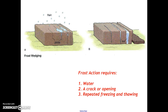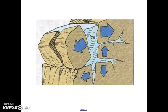In order for frost wedging, or frost action, to happen, you need three things: water, a crack or opening in a rock, and a repeated series of freezing and thawing events. In other words, the temperature has to drop below freezing, then go above freezing, then below, then above. In New York, frost action is quite common — we see this every winter. Here's another image showing water getting into cracks, freezing, expanding, and breaking apart the rocks, with pieces falling off of this rock face.